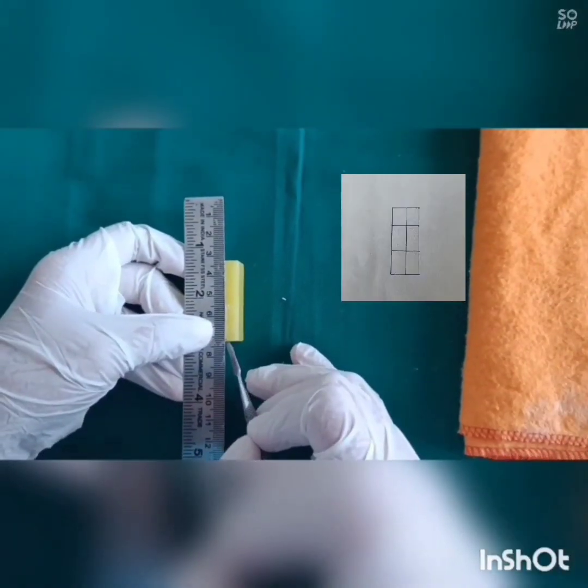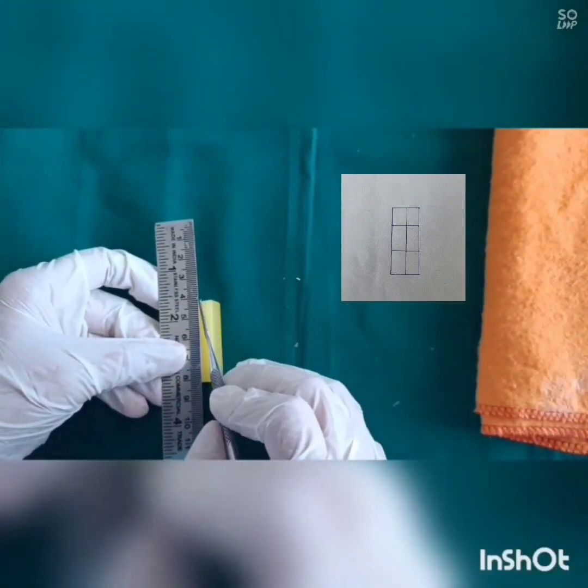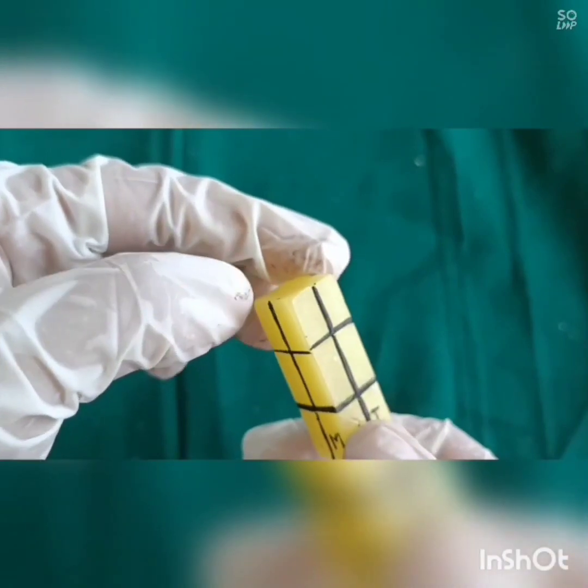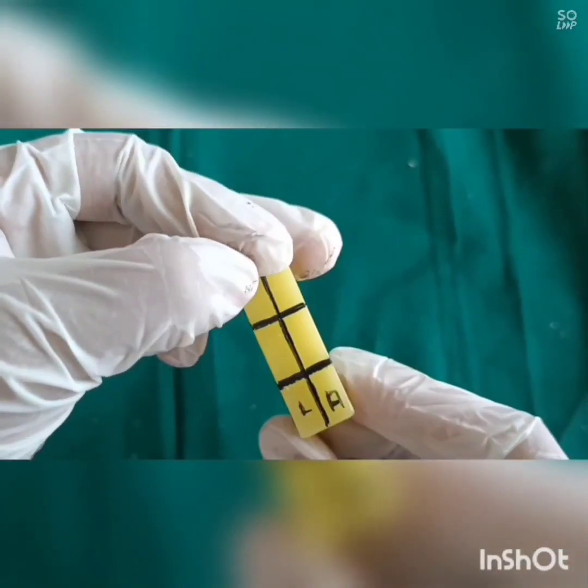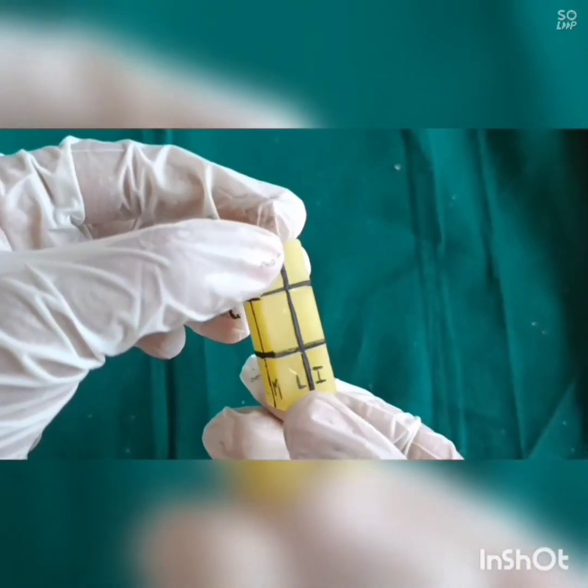Draw midline on all surfaces of the wax block. Mark one side as labial surface and opposite to labial side is lingual surface and other two are marked as mesial and distal.